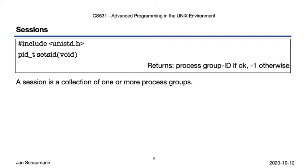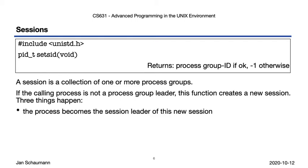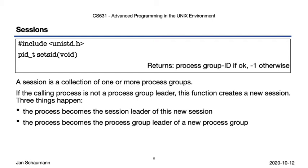When you call setsid, the following happens: you become the session leader for a new session, and you also become the process group leader of a newly created process group. That is, you begin with a clean slate. The calling process will be the only process in either the session or the process group. There will also be no controlling terminal for this new session, so if you wish to allocate a controlling terminal, you'll either have to open one on System V-derived Unix variants, or call ioctl to request a controlling terminal. The device /dev/tty then represents the controlling terminal.